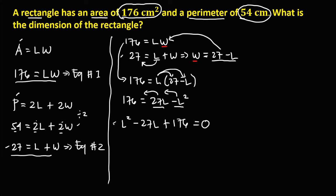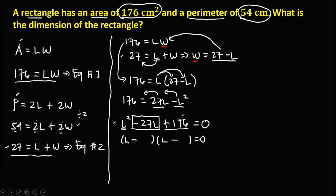Since this is a quadratic equation, we can solve it by factoring. We write L in both sides of the factor. Since the last term is positive and the middle term is negative, both factors are negative. We need to find the factors of 176 that when added give 27.